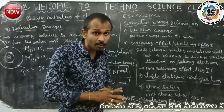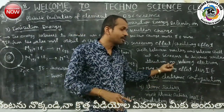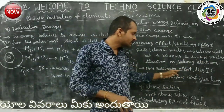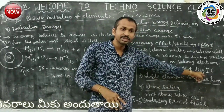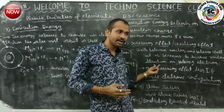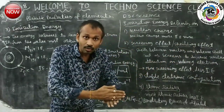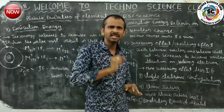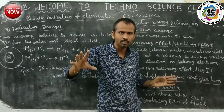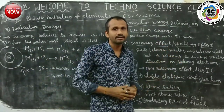The inner shells act as screens to decrease the attraction force of the nucleus on the valency electrons. So if the screening effect is more, less ionization energy is required, because there is less attraction of the nucleus on the outermost electrons, and we can easily remove those electrons.